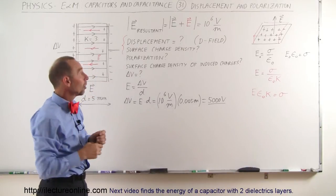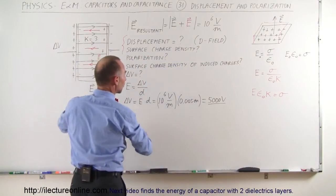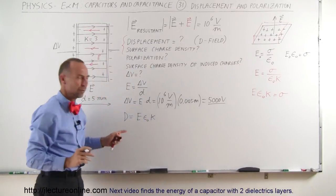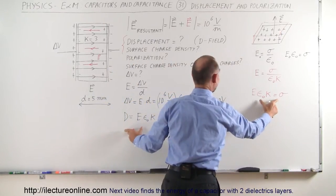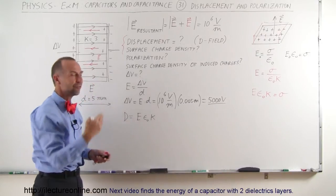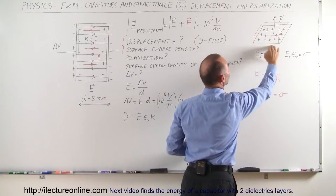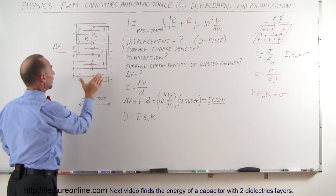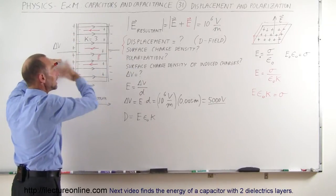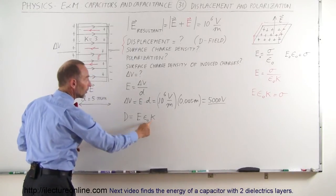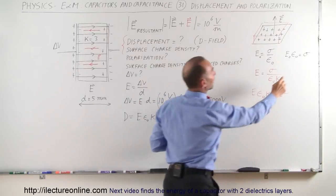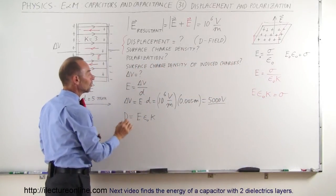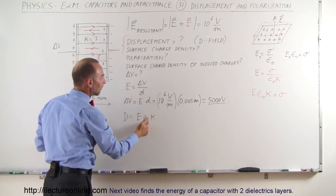The displacement, also called the D field, is defined as D equals E times epsilon sub nought times k. Notice this is exactly the same as the expression for sigma — so the displacement is defined as the charge density of the charges on the capacitor plates when we place the dielectric in there. When we put the dielectric in with the same potential difference, the charge on the plates increases by a factor of the dielectric constant. The displacement equals E times epsilon sub nought times k using the resultant electric field.